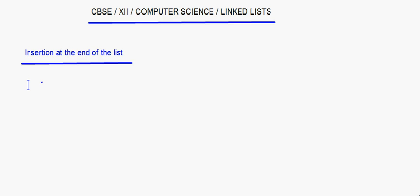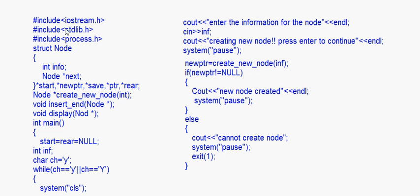Today let's take up a linked list and we'll do insertion at the end of a linked list. I'll take up the program and along with that we'll explain how the insertion will happen. This is the same program — the main method is the same as we did for insertion at the beginning of the list, and the node structure will also be the same. I'll just go through this code quickly.